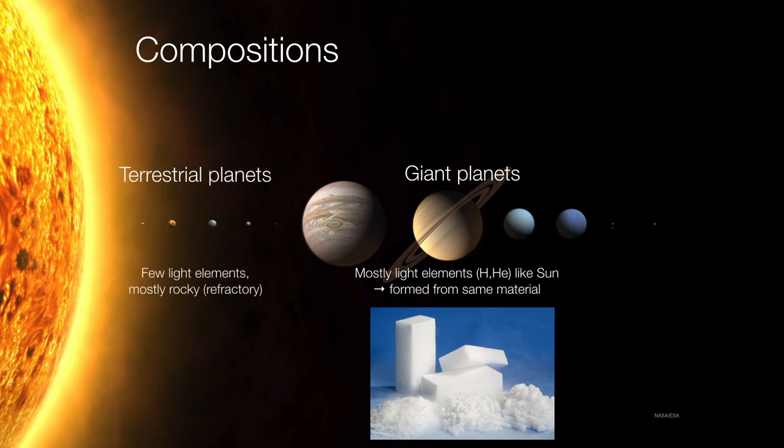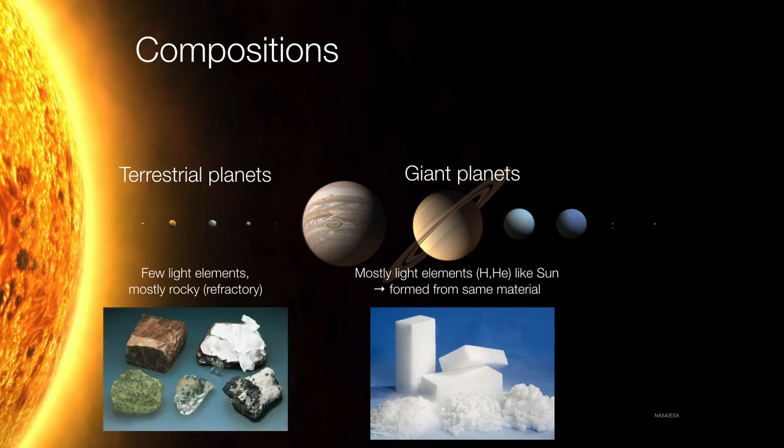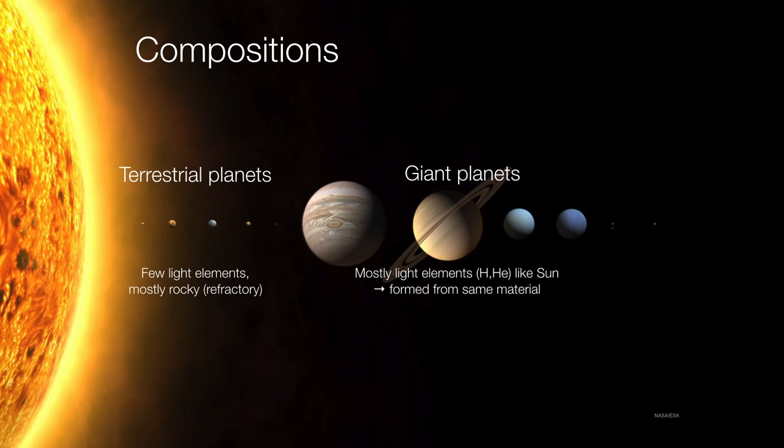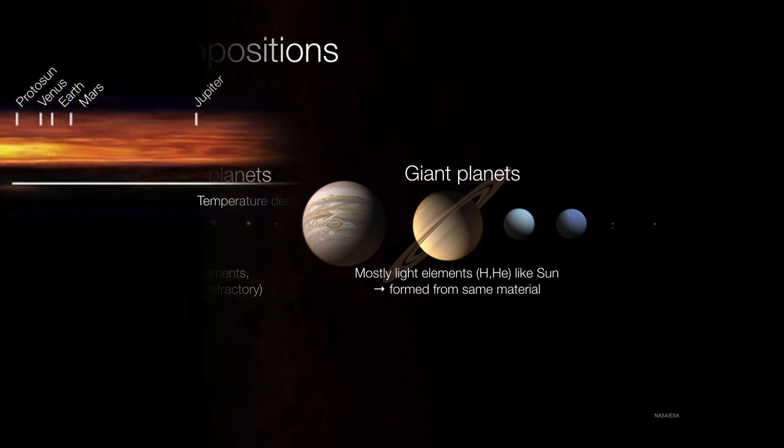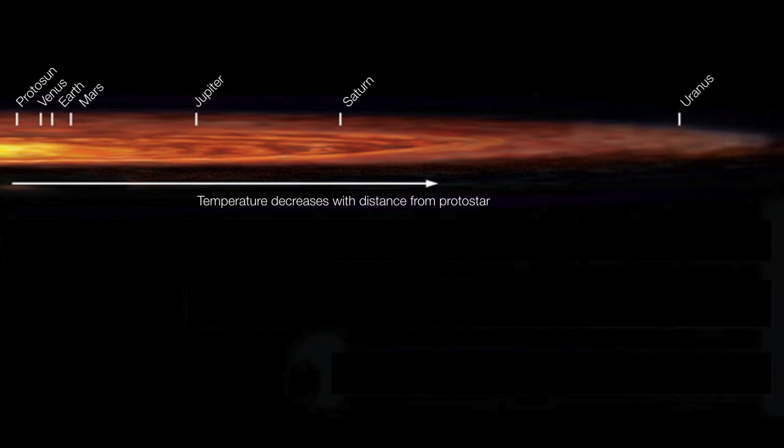But terrestrial planets, on the other hand, have relatively few of these lightweight elements. And they're mostly composed of rocky or refractory materials. So minerals, olivines, and so forth. So why then are these two types of planets so very different from one another in terms of their composition? And the answer goes back to the formation of the planets themselves.